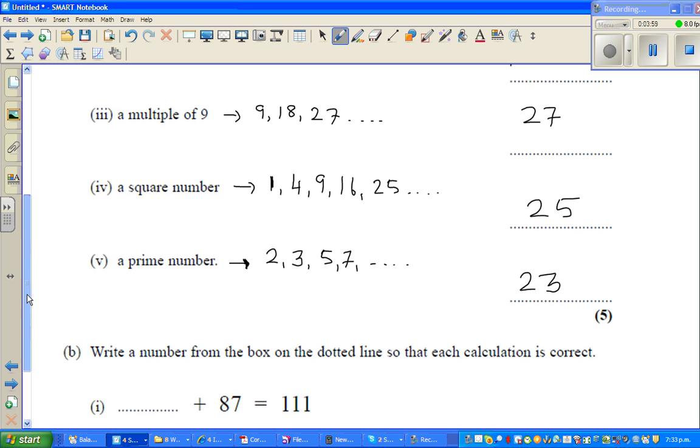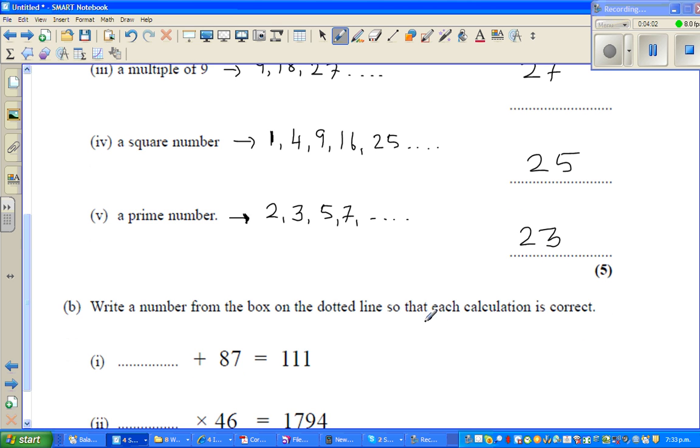Now write a number from the box so that each calculation is correct. What plus 87 equals 111? So I know 87 plus 3 is 90, then 90 plus 20 is 110, and then 110 plus 1 equals 111. So my answer would be 24.